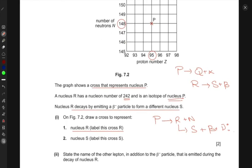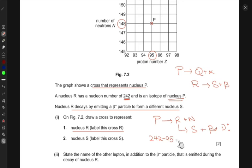The number of neutrons for nucleus R would be 242 minus the proton number 95. It's an isotope so the proton number is the same, which gives 147. So R is at 147 neutrons, lying on this line with the same proton number. This is R.